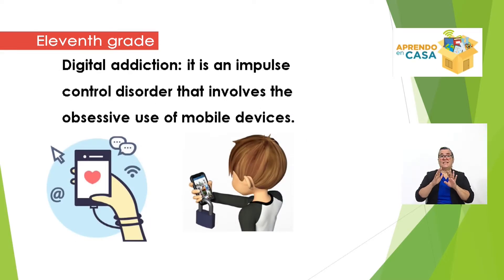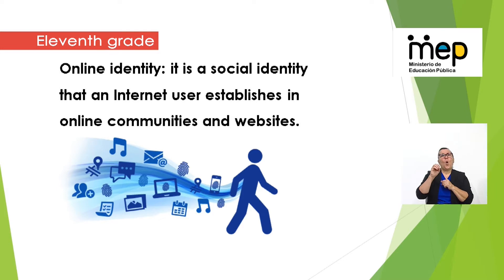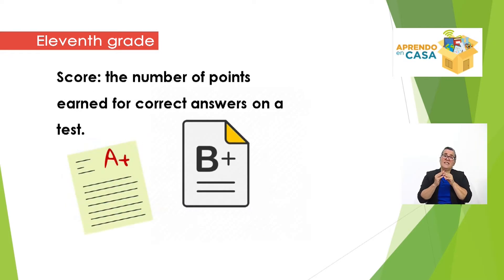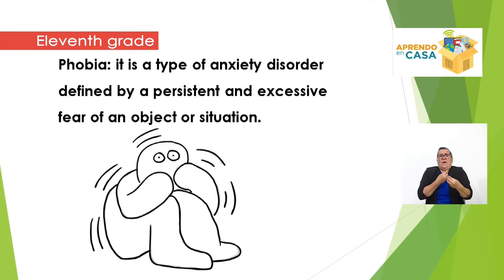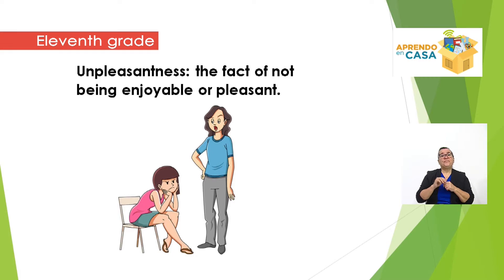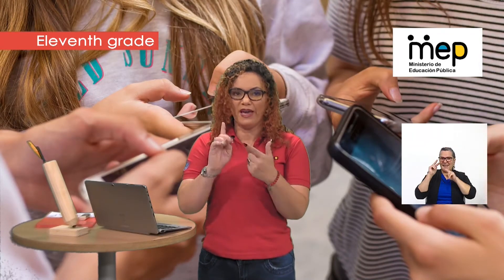Digital addiction — an impulse control disorder that involves the obsessive use of mobile devices. Online identity — a social identity that an internet user establishes in online communities and websites. Score — the number of points earned for correct answers on a test. Phobia — a type of anxiety disorder defined by a persistent and excessive fear of an object or situation. Unpleasantness — the fact of not being enjoyable or pleasant.